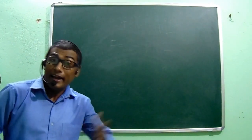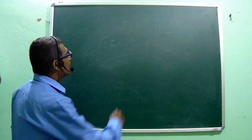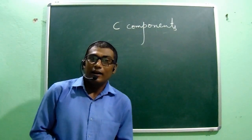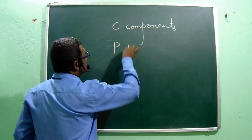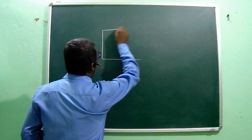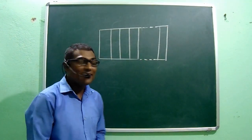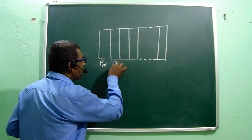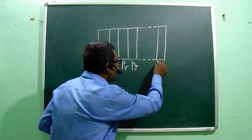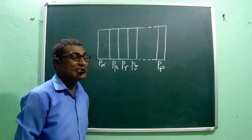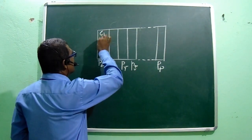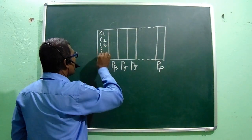Consider a heterogeneous system at equilibrium consisting of C components distributed between P phases — P-alpha, P-beta, P-gamma, P-delta, and so on up to P phases. Among them, the C components are distributed: C1, C2, C3, and so on to Cc.